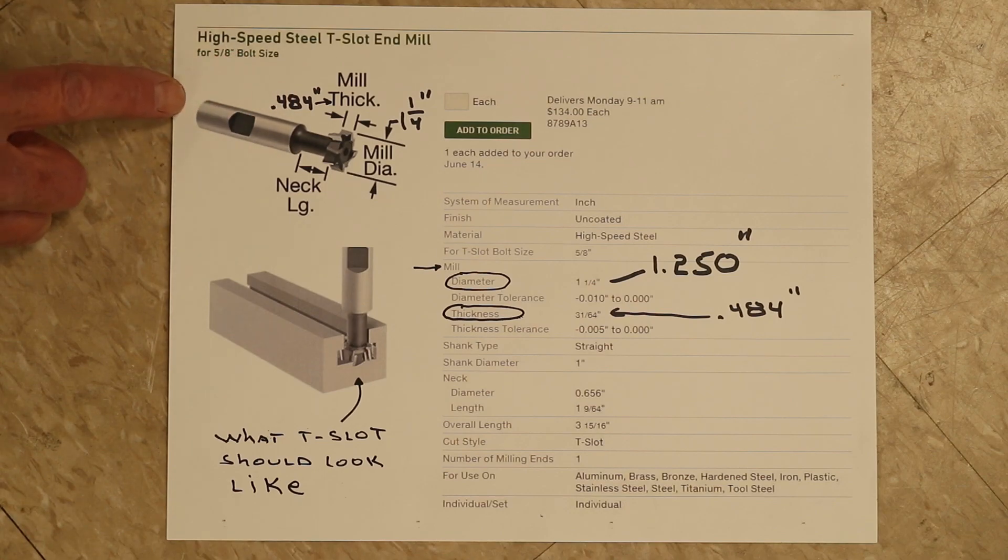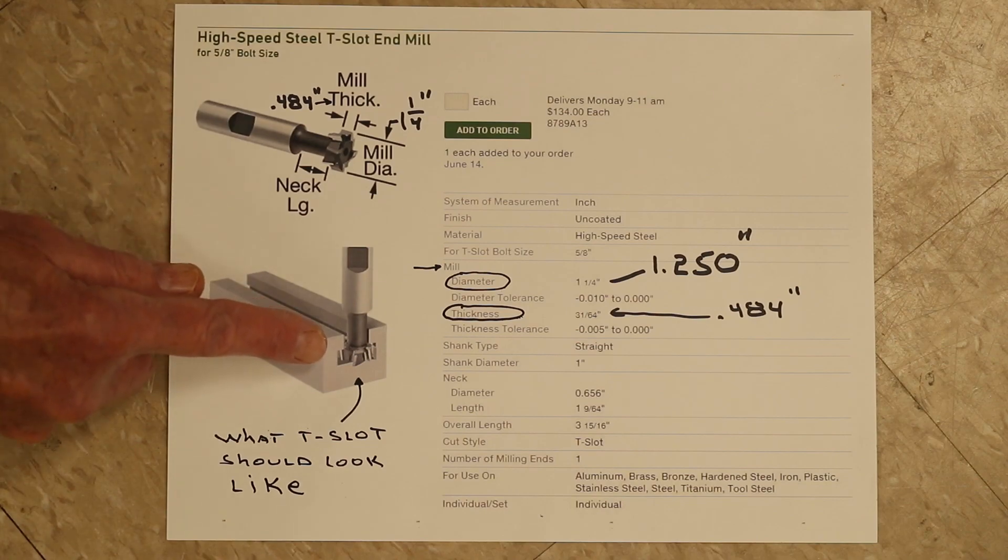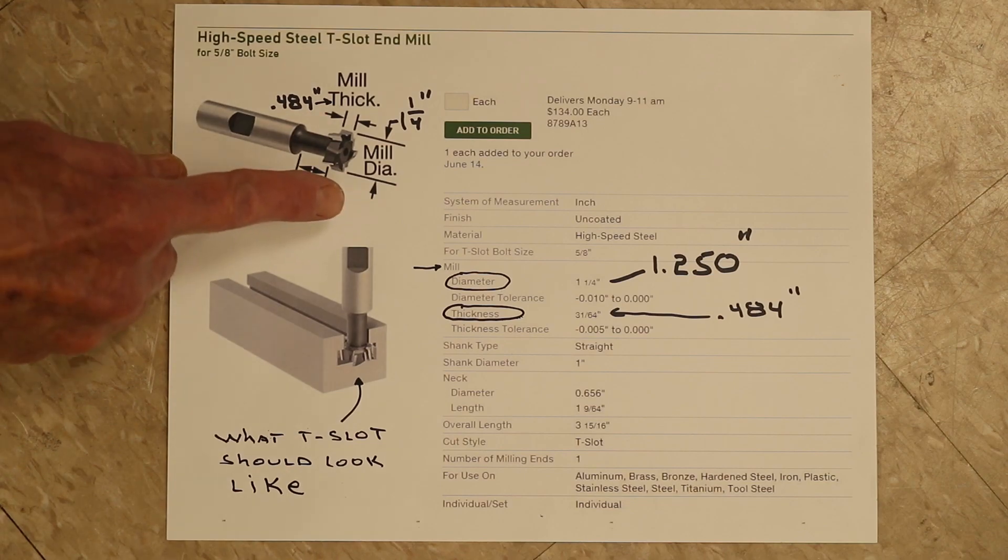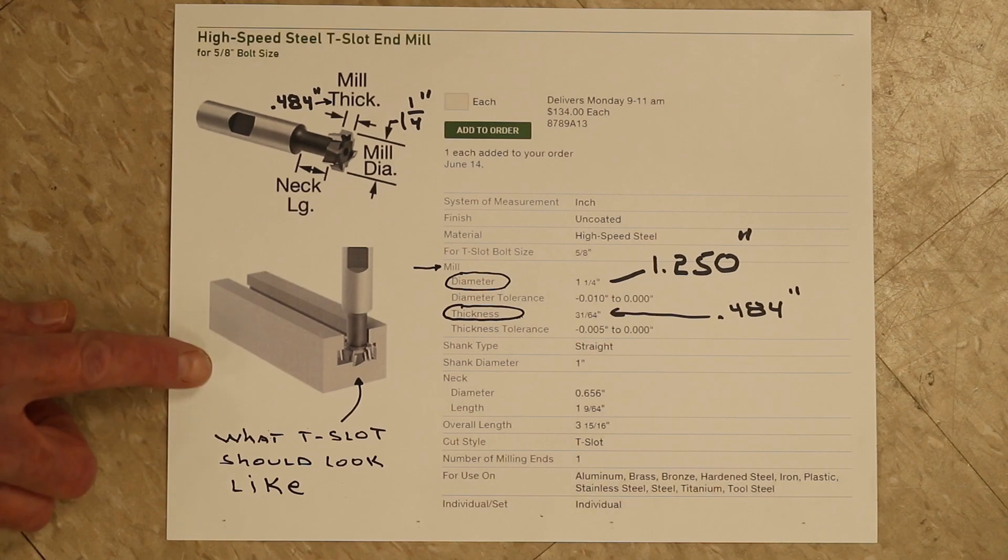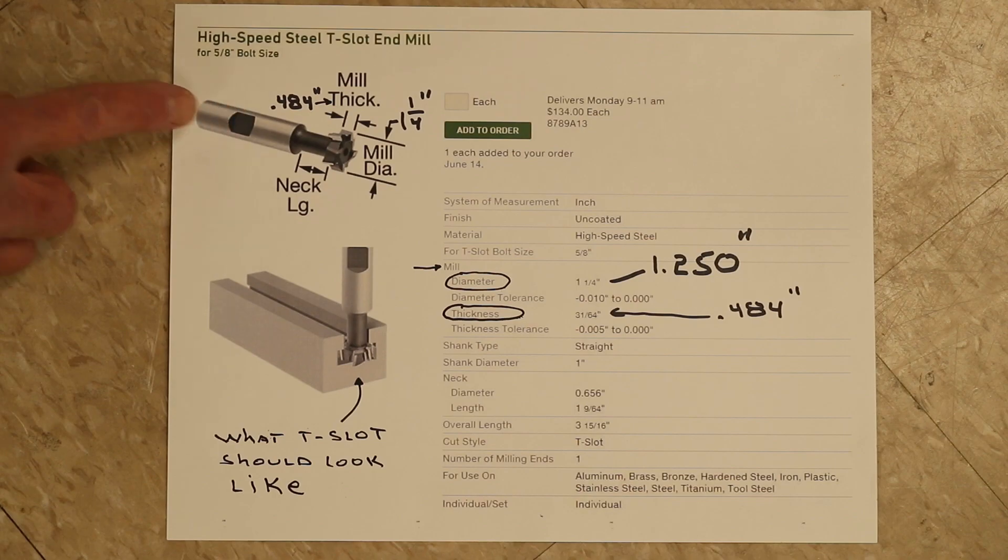When that cutter moves along and through the slot to make the slot, the T-slot will end up looking like is shown in the diagram, the picture with my finger. And those are the dimensions that are required for standard 5/8 and 16 millimeter T-slot nuts.